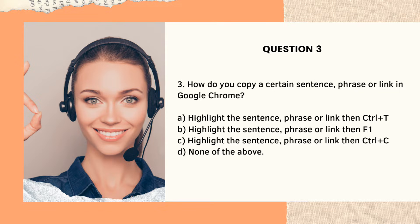Question number three: How do you copy a certain sentence, phrase, or link in Google Chrome? This one is very helpful and you use this a lot. Letter A, highlight the sentence, phrase, or link, then Ctrl plus T. B, highlight then F1. C, highlight the sentence, phrase, or link, then Ctrl plus C. And D, none of the above. The answer is letter C — highlight the sentence or select the phrase or link, then use Ctrl plus C on your keyboard.